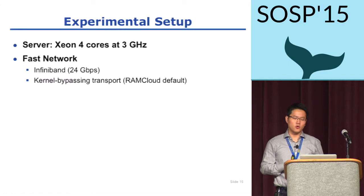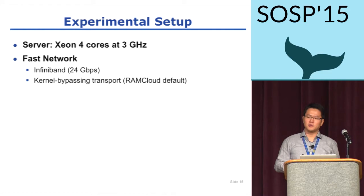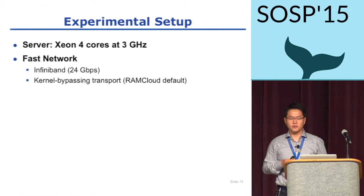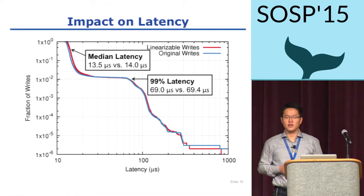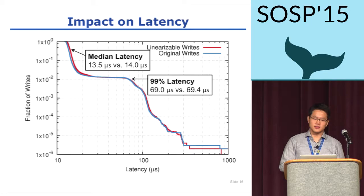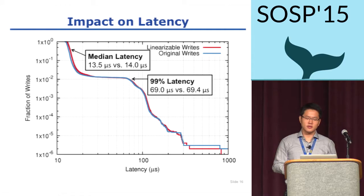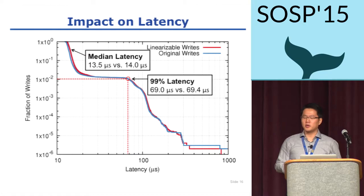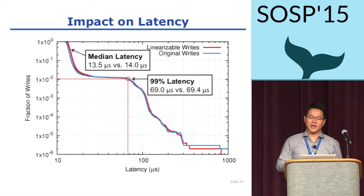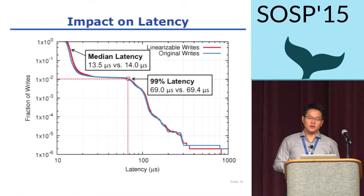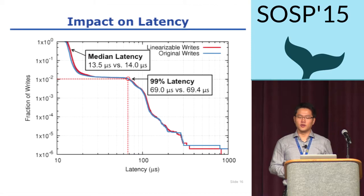For our experiments, we used a machine with four cores at around 3 GHz, equipped with fast InfiniBand NICs. We used RAM Cloud's special transport, which talks directly with the network card without going through the kernel. This graph shows the reversed CDF of write latencies, and the y-axis is the proportion of data points in log scale. For example, 1% of requests took 69 microseconds or more. At the median value, Riffle made write operations linearizable by only adding 500 nanoseconds on top of 13.5 microseconds of latency. The two lines are almost identical, showing Riffle's impact on latency is very minimal.